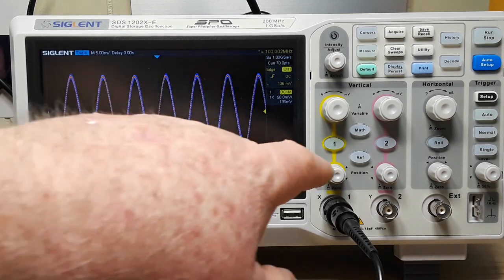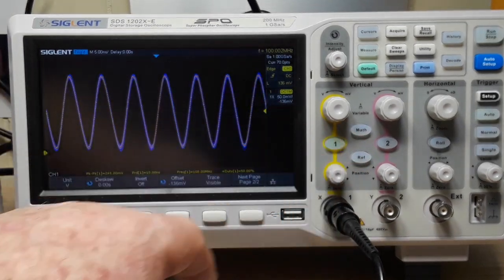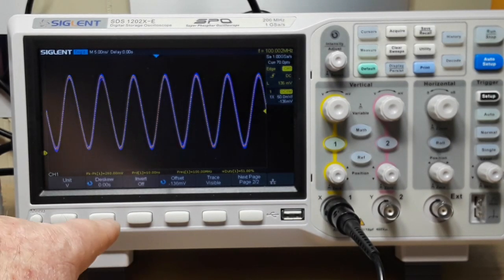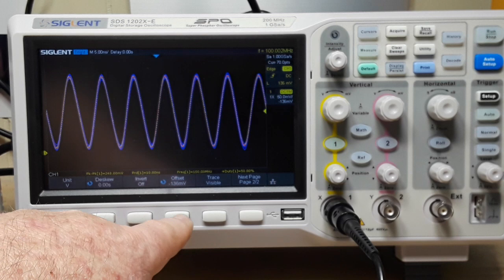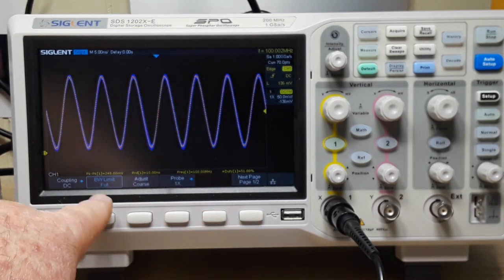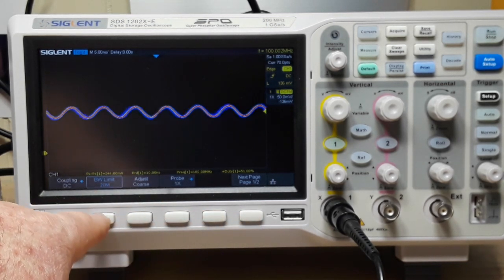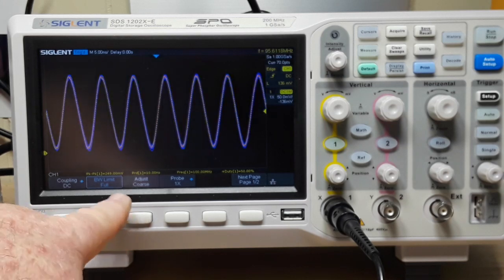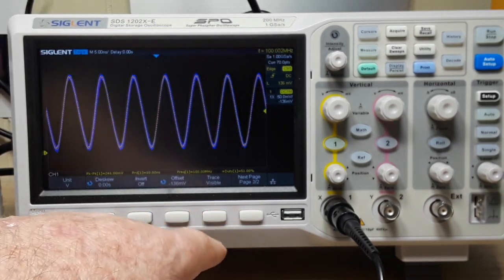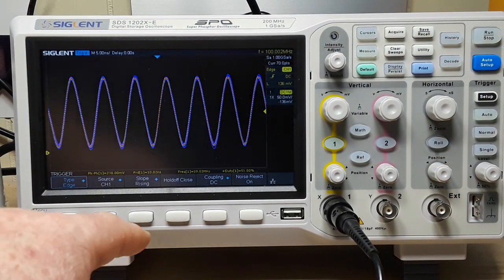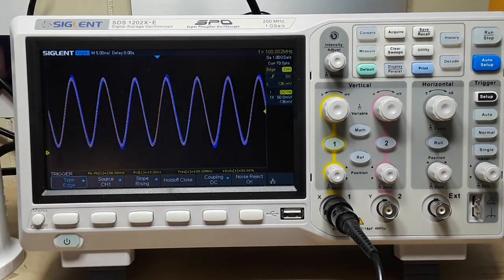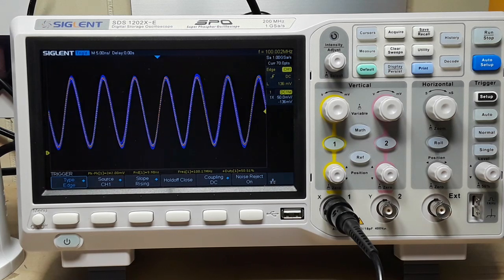We have the skew, invert, offset, trace visible, bandwidth limit, and our course adjust. So it's not there, and it's also not under our trigger menu, which you can find them there as well. But yeah, very nice scope.